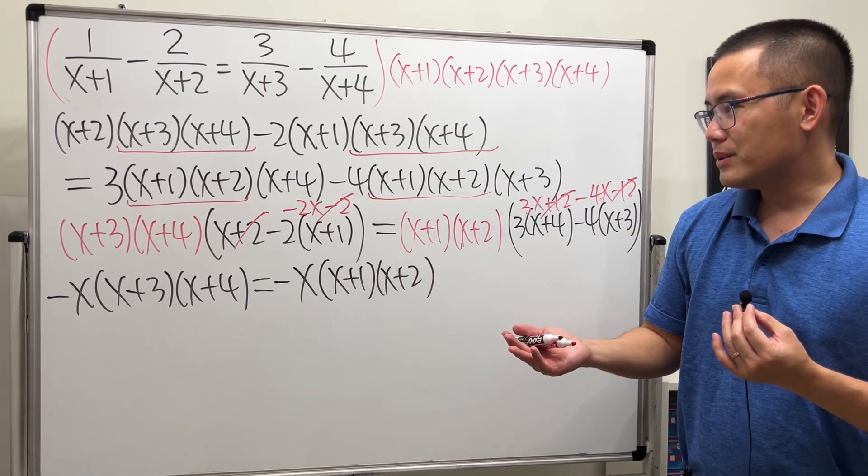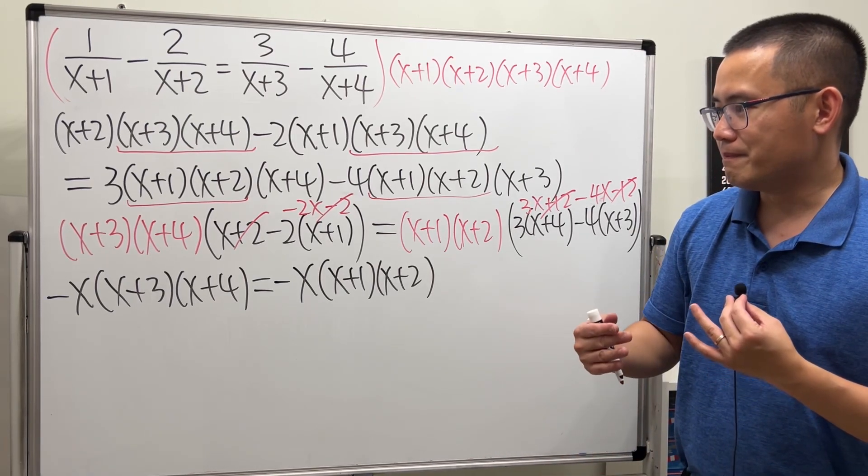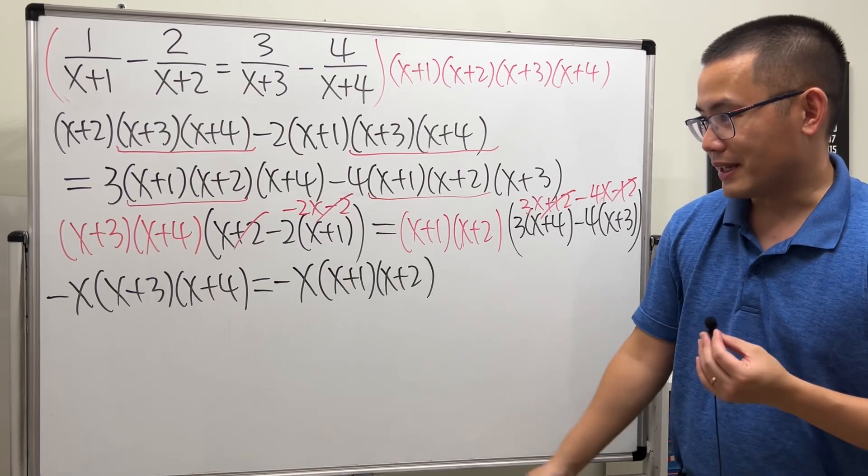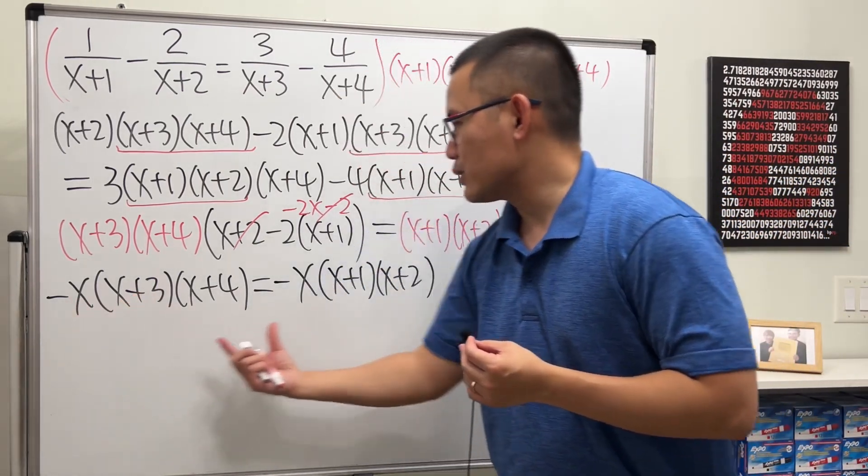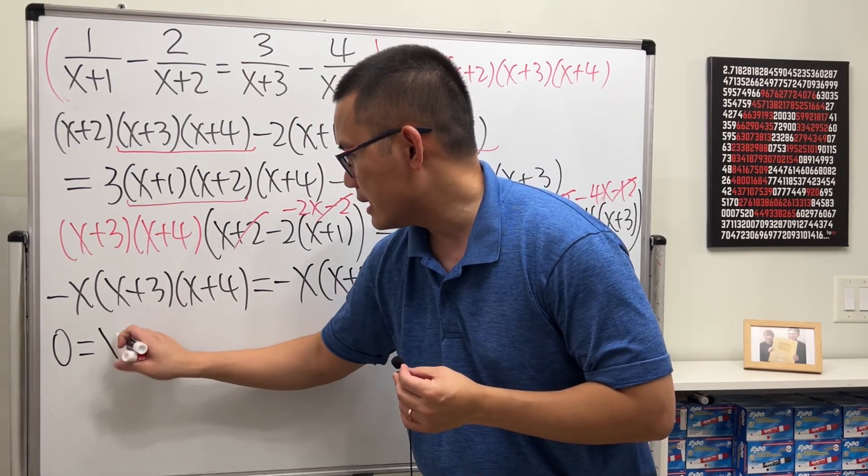But this, we can also do the following, right? To make it more organized, in my opinion. I'm going to move this to the other side. So we will have 0 equals, and that will be a positive x.